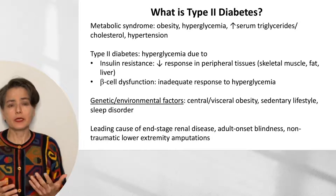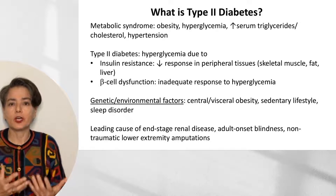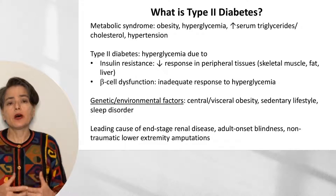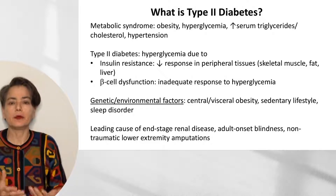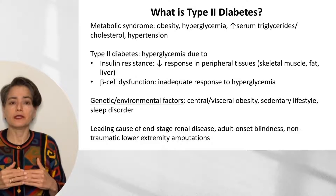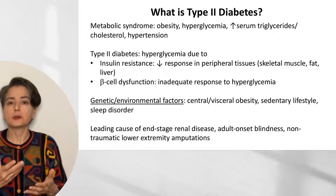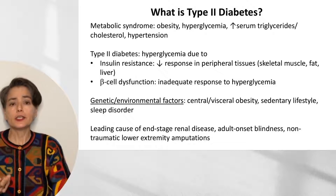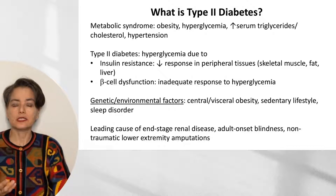So do your laboratory tests. Typically, patients will present with an earlier stage of metabolic syndrome, characterized by obesity, hyperglycemia, increased serum triglycerides and cholesterol, and hypertension. Then we move on to type 2 diabetes. Unlike type 1, where hyperglycemia occurs because you don't have enough insulin from beta cells, in type 2 diabetes we see insulin resistance — the insulin is present, but there is decreased response in peripheral tissues, particularly skeletal muscle, fat, and liver. Additionally, you have beta cell dysfunction, as the body cannot appropriately increase insulin output to compensate for the hyperglycemia.